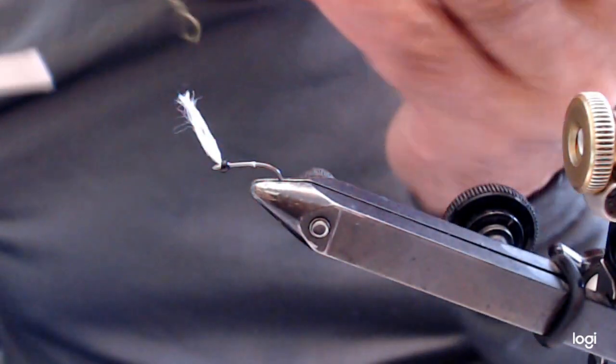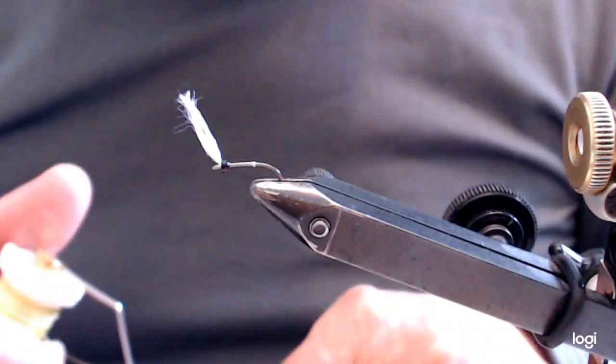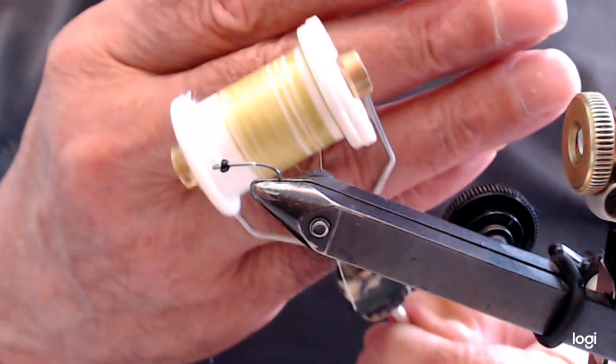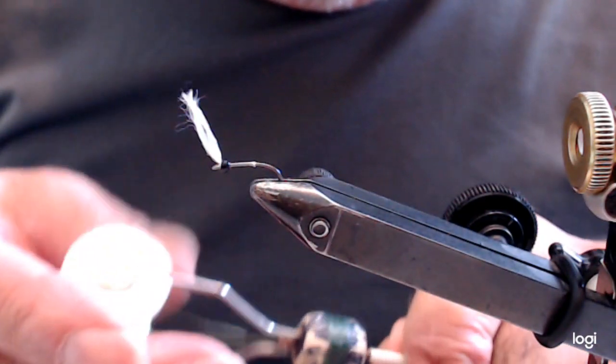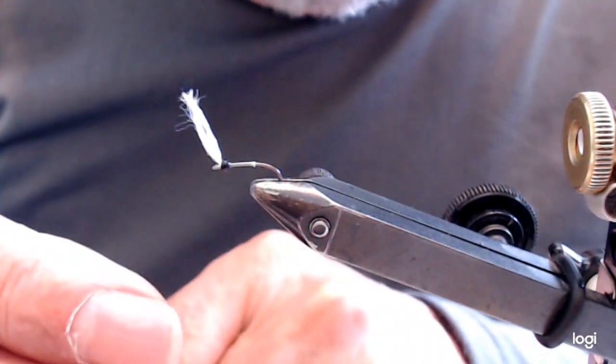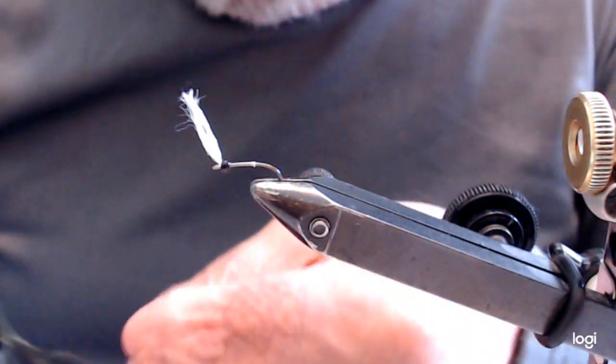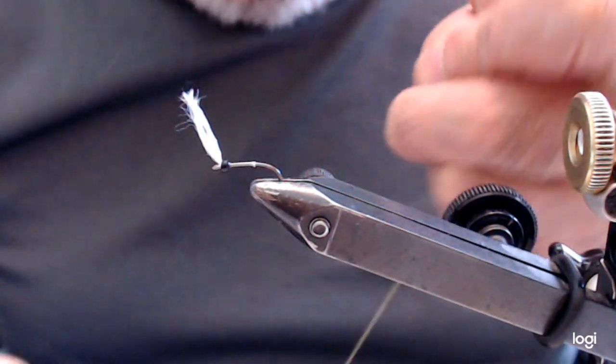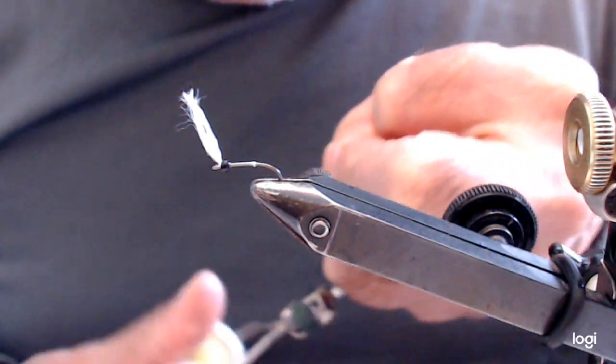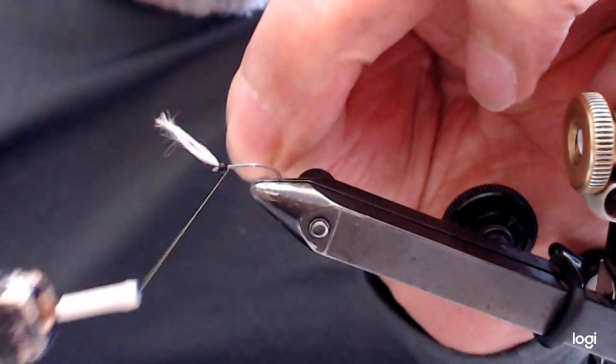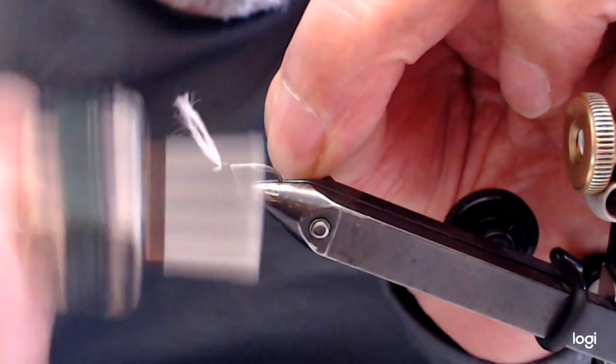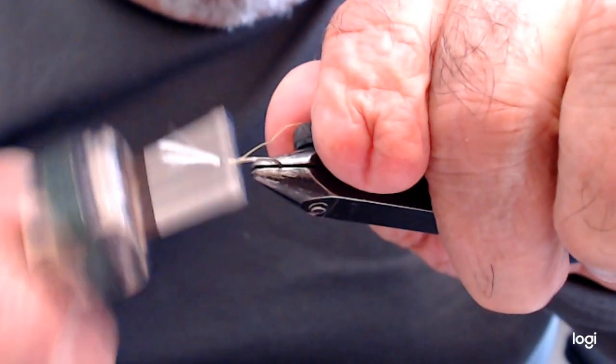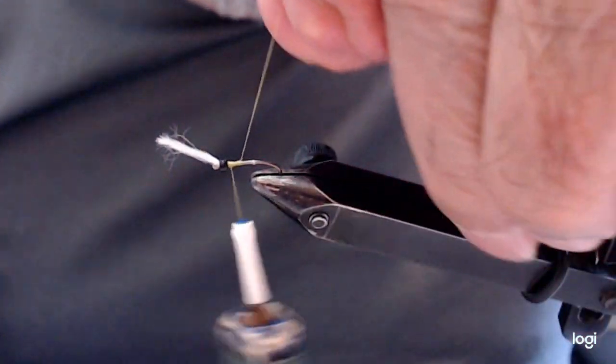Now I'm going to use, it's called a light olive. It's a light olive green. And this one is by Superfly. It's a beautiful color. I'll tie that on behind the bead like that.